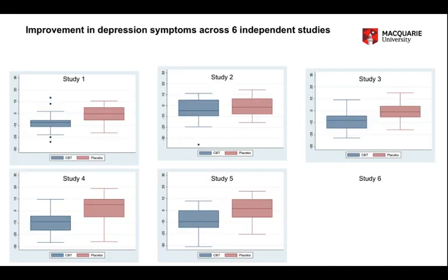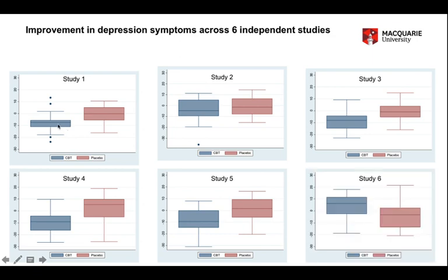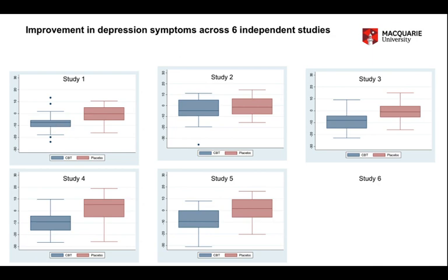Let's take a hypothetical example. This is some simulated data where we have six studies comparing cognitive behaviour therapy (CBT, in blue) versus placebo (in red), with respect to change in a depression score from before to after treatment. In the first five studies, the CBT has a more negative median change than the placebo — the bar in the middle of the blue box is lower, indicating a greater decrease in depression scores. The basic result that CBT is superior to placebo is true for all five of these studies.